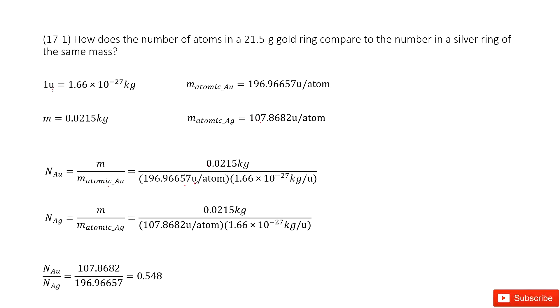And then we can see the units. This is U, this is kilograms. We need to convert the unit U to kilograms. This we learned in our textbook. And then we can do the calculation to find the number of gold atoms.